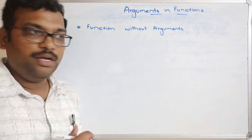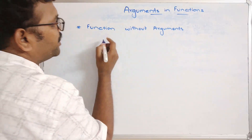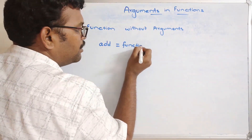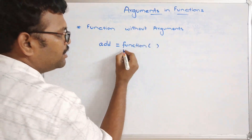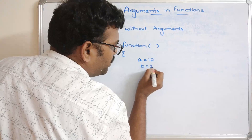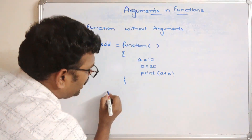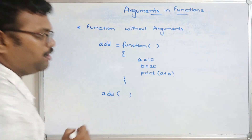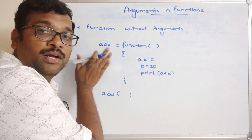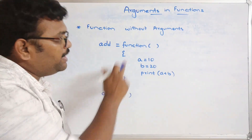For example, let us take the function name 'add'. We write the keyword 'function' with zero arguments, open the curly braces, and inside we declare a = 10 and b = 20, then print a + b. Then we write the function call 'add'. This is the function definition and this is the function call. The definition will only be executed once the control reaches the function call.